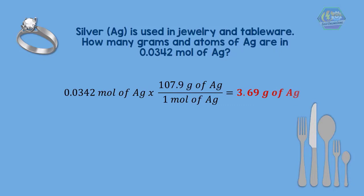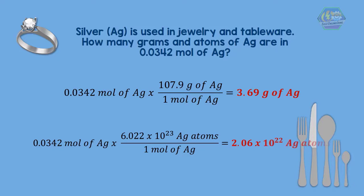On the other hand, we have 0.0342 mole of silver multiplied by Avogadro's number to get the number of atoms of silver. We need to report it with three significant figures to respect the rule of significant figures.